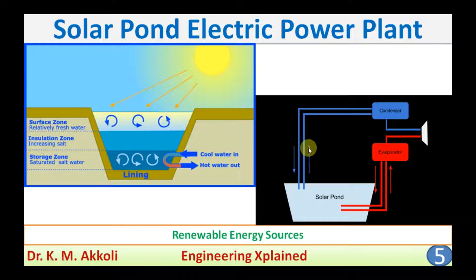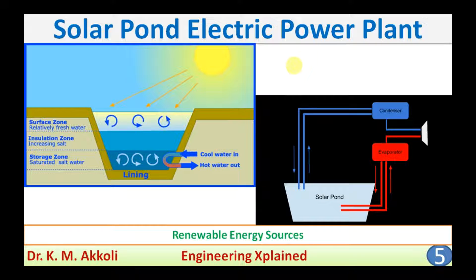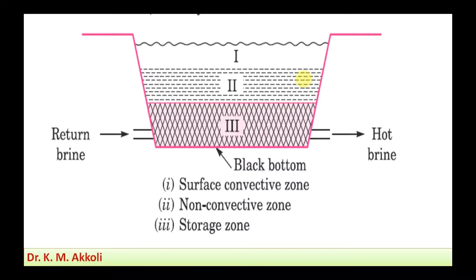Welcome to this session. I am going to explain the solar pond electric power plant. The pond is used just like a lake to collect solar heat energy, and then that heat energy is converted into electric power. I will explain how the heat energy is stored in the pond, and how the heat contained in the water is converted into electricity using the power plant.